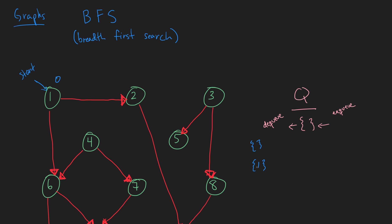Now we dequeue 1 — not pop, that's the stack — and we enqueue its adjacency list: 2 and 6, in numeric order. So the queue now has 2 and 6. Their distances will increase to 1, since they are 1 node away from the starting point.